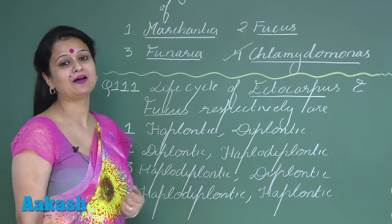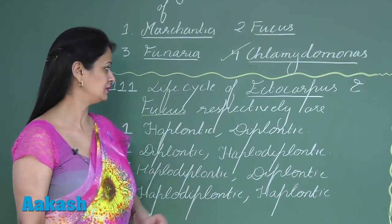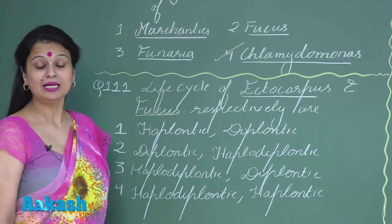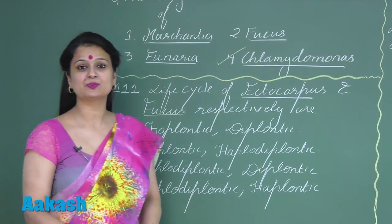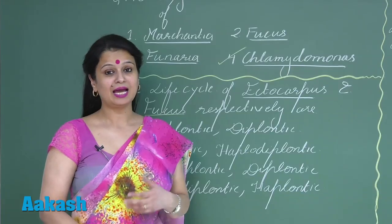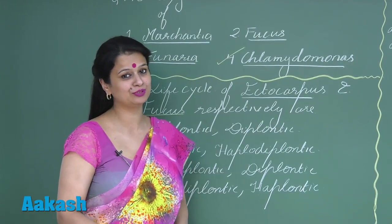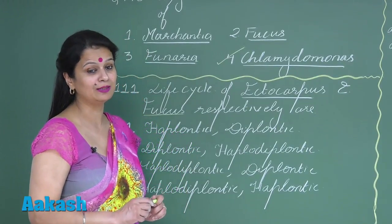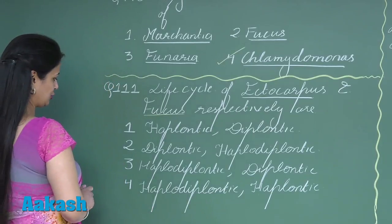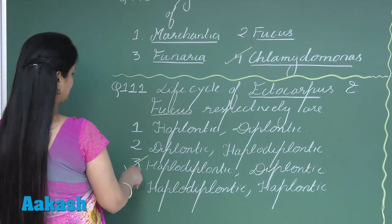In question number 111, we have to look for the right life cycle pattern in Ectocarpus and Fucus. In Ectocarpus there is a haplodiplontic life cycle, and in Fucus there is a diplontic life cycle. So the correct option is option number three.